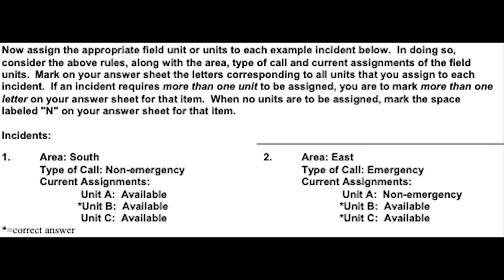Incident 2: Area East, an emergency. Unit A is assigned to a non-emergency, Unit B is available, Unit C is available. The correct answer is sending both Unit B and Unit C, because they are both available. This is an emergency call requiring units to be sent, and there are only two units available since Unit A is currently on a non-emergency assignment.